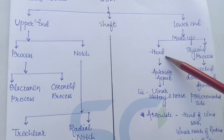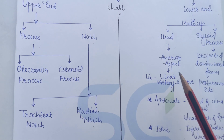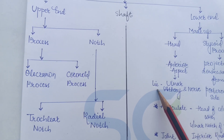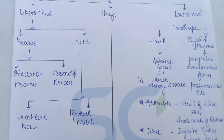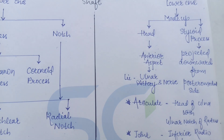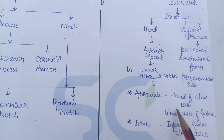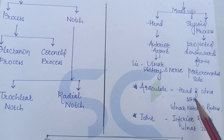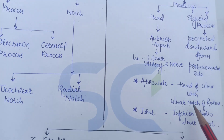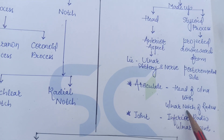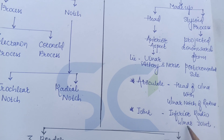The lower end is made up of the head and the styloid process. The ulnar artery and nerve lie in the anterior aspect of the head. The styloid process is projected downward from the posterior medial side. The head of the ulna articulates with the ulnar notch of the radius, forming the inferior radio-ulnar joint.